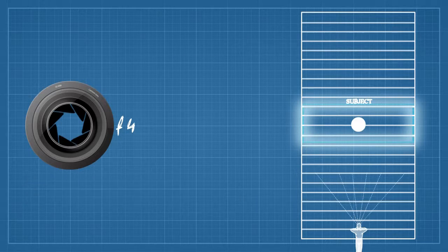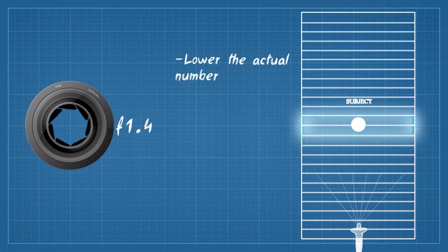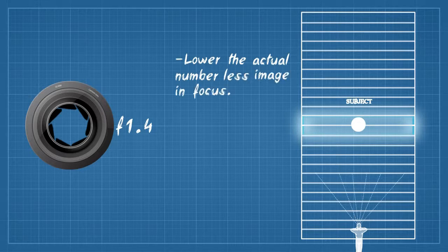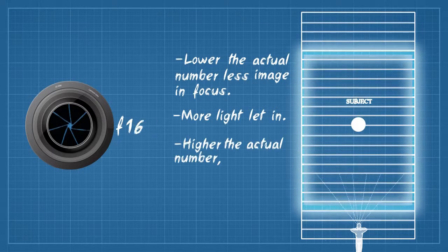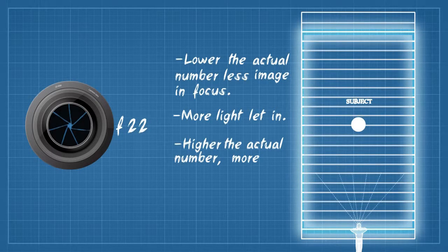The only things you need to remember right now are: the lower the actual number of your aperture setting, less of your image will be in focus, and more light will be let into your camera. Whereas the higher the actual number of the aperture setting, more of your image will be in focus, but less light will be let into your camera.